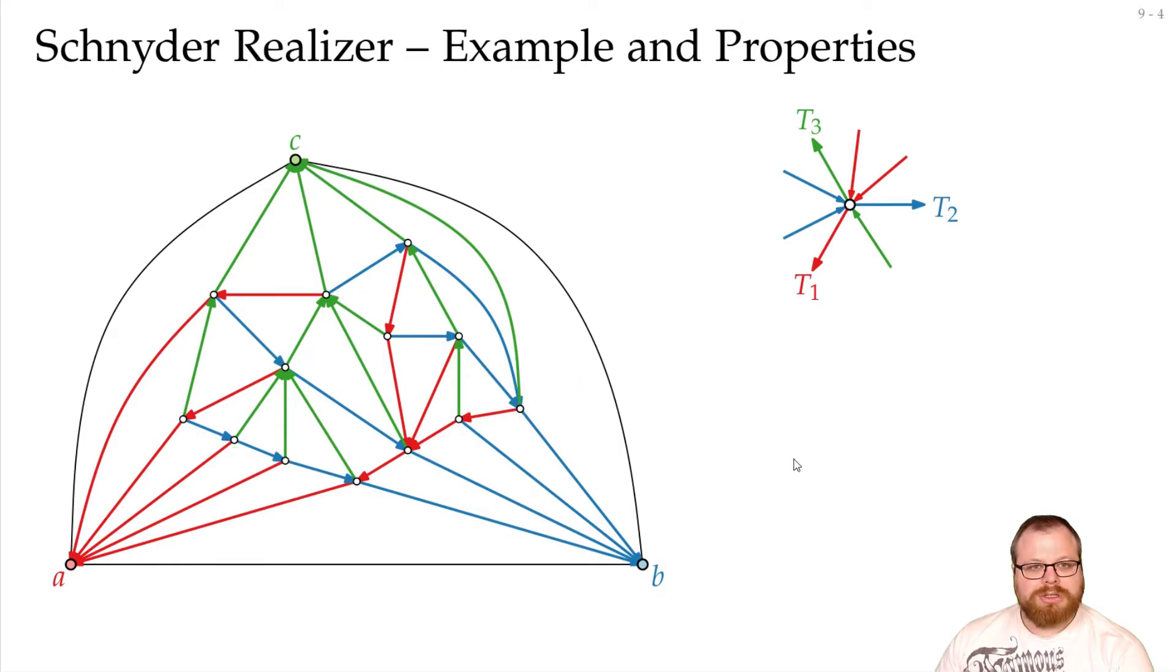And this is a valid Schnyder realizer. But we can easily see that it is not unique. If we just look at this triangle here, we can flip these edges, and we still have a valid Schnyder realizer. Because the only thing that changes is that are these three vertices. And if we look at this one here, instead of going from outgoing green to outgoing red, and then incoming green, we have an incoming blue in between.